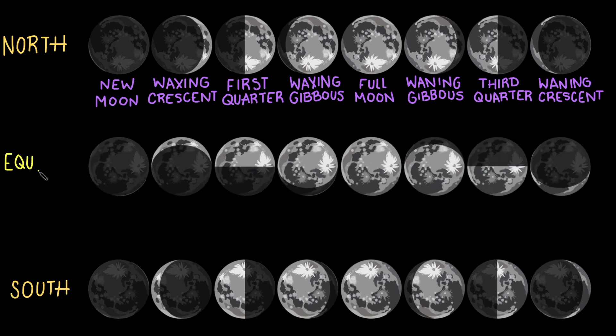At the equator, the waxing crescent appears as an N, and the phases will appear horizontally rather than vertically. Now, the phases that I previously mentioned are a bit exaggerated. More accurately, these are the phases seen at the north and south poles.